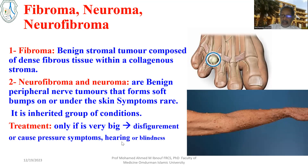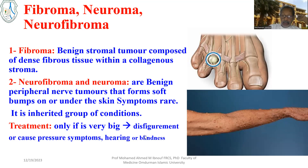It might be inherited in neurofibromatosis. If it is in an important part — for example, the ear — it can cause hearing problems, or it can cause blindness if it is in the optic nerve. A neuroma of the optic nerve can also cause pain.